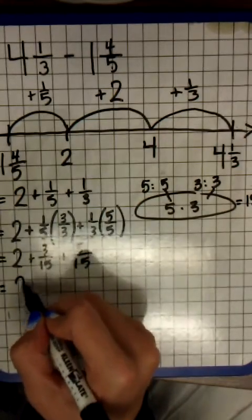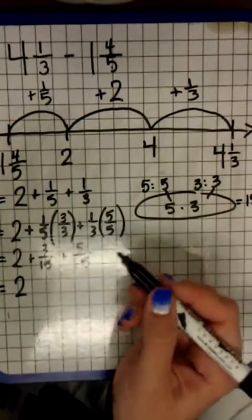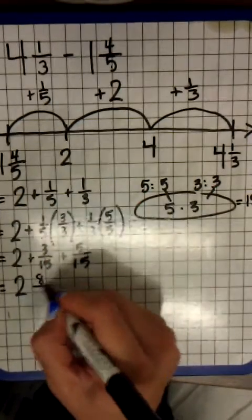Now I'm going to simplify. So I've got two and three plus five is eight fifteenths.